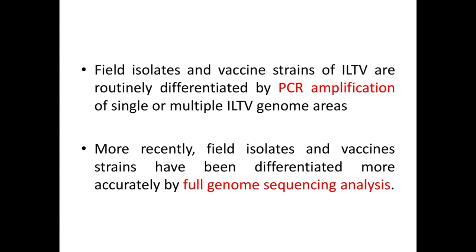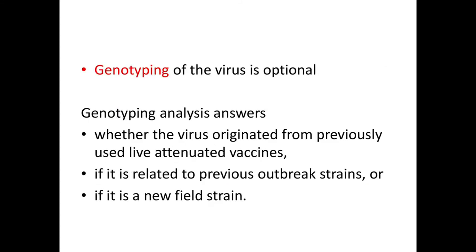Field isolates and vaccine strains of ILT virus are routinely differentiated by PCR amplification of single or multiple ILT virus genome areas. More recently, they have been differentiated more accurately by full genome sequencing analysis. Genotyping analysis answers whether the virus originated from previously used live attenuated vaccines, is related to previous outbreak strains, or is a new field strain.